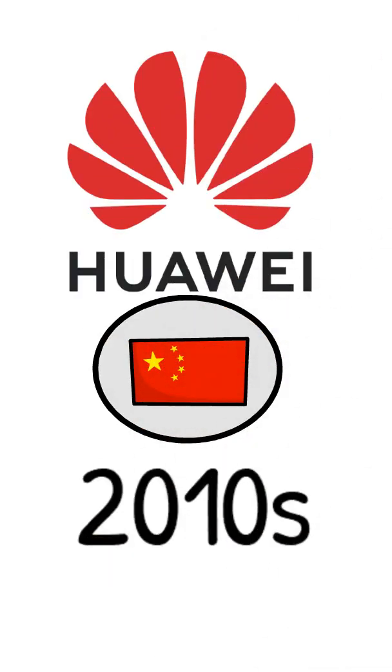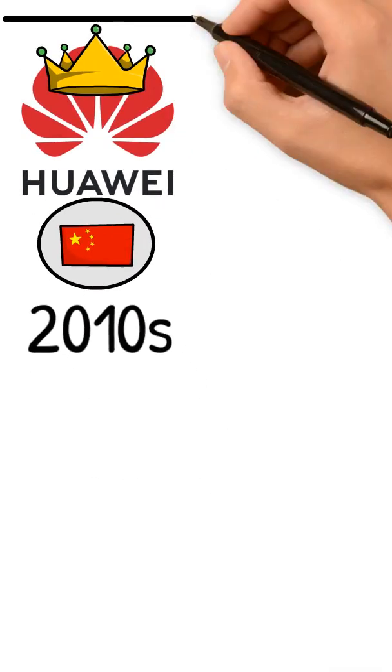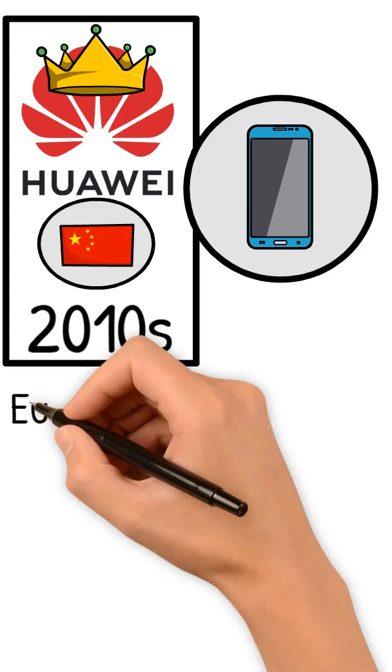Huawei wasn't just another Chinese tech company. By the late 2010s, it had become a global leader in telecom infrastructure, quietly building the backbone of mobile networks across Europe, Africa, and Asia.